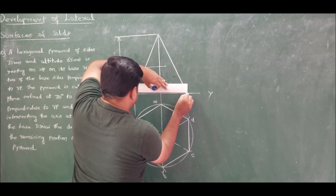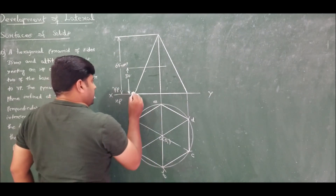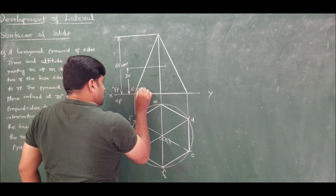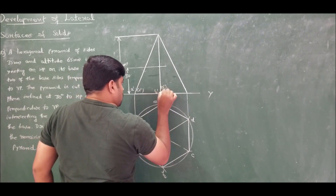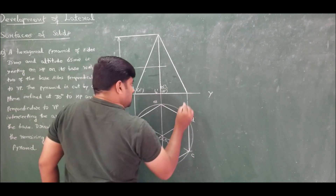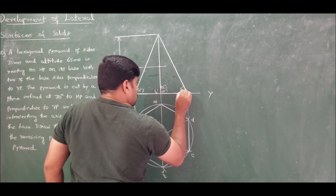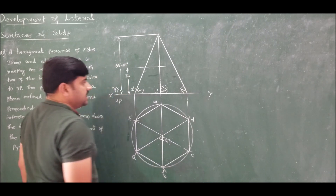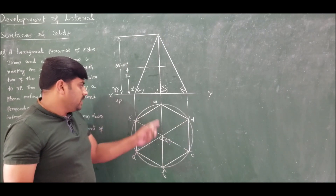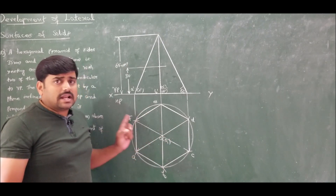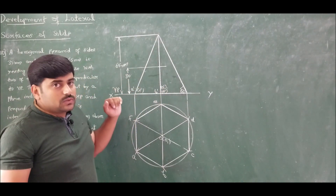The slanted edges are connected. Mark the intersection points: A-dash and F-dash on edge AO, B-dash and O-dash on BO, O-dash and E-dash on EO, and C-dash and D-dash on CO and DO. We have six slanted edges: AO, BO, CO, DO, EO, and FO. None of these are parallel to VP, so we do not have true slant edge lengths in the front view. To get the true slanted edge, rotate one slant edge in the top view to make it parallel to VP.